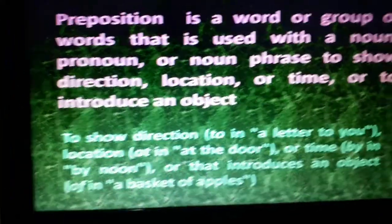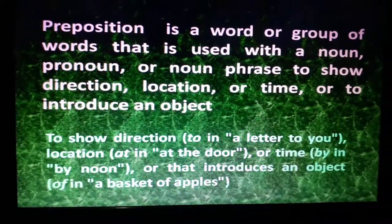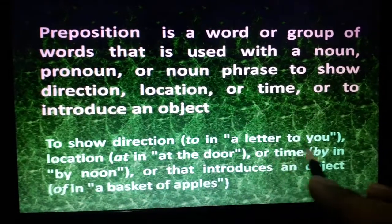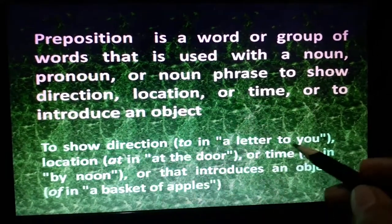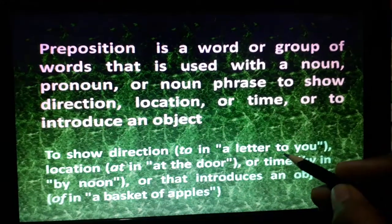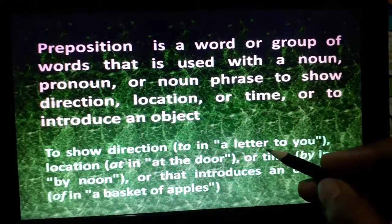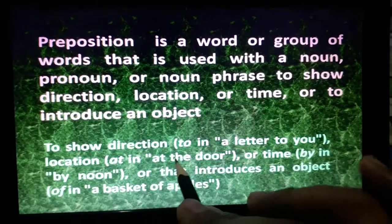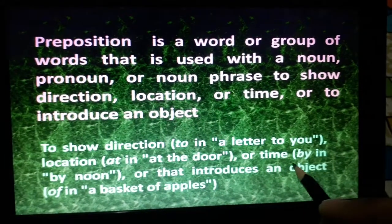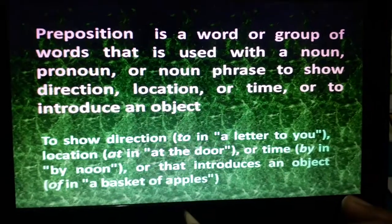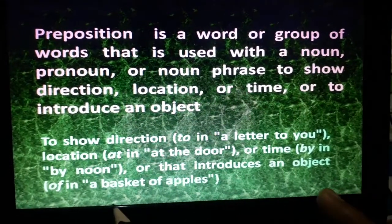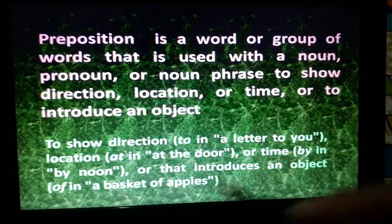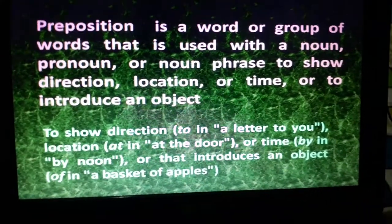For example, to show direction: 'a letter to you' — here 'to' shows direction, indicating where the letter has gone. For location: 'at the door' — here 'at' shows location. For time: 'by noon' — 'by' shows time. And to introduce an object: 'a basket of apples' — like 'seb ki toki' — here 'of' introduces the object.